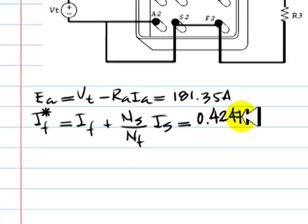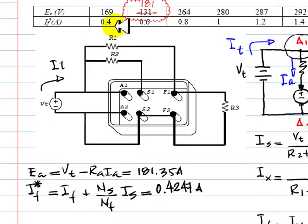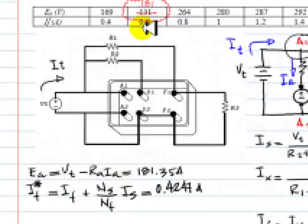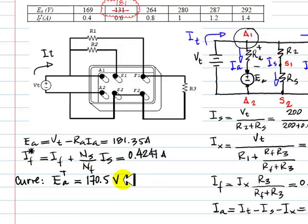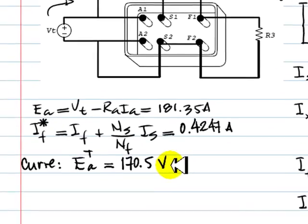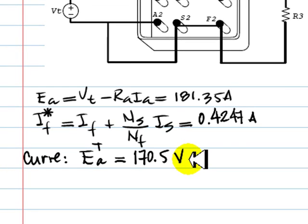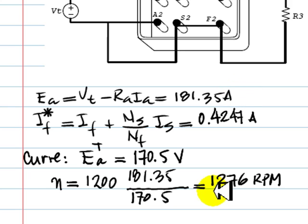With that value we go to the curve, to this curve, and we interpolate between 0.4 and 0.6 that was measured at 1200 times. The curve says that for an IF star like this one, EA should have been 170.5 volts if the velocity had been 1200 RPM, but the actual EA was this one, so the velocity is greater than 1200 RPM, and this is the velocity of rotation of that machine. Thank you very much.